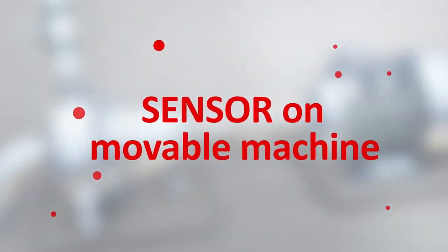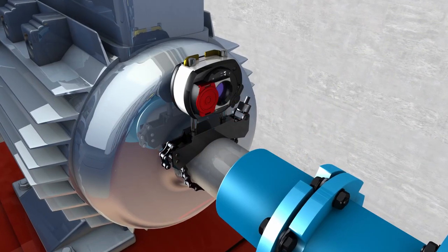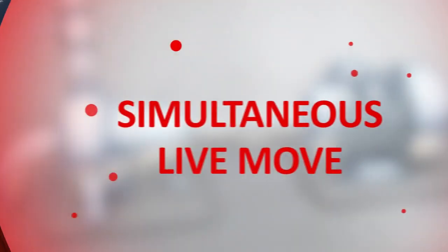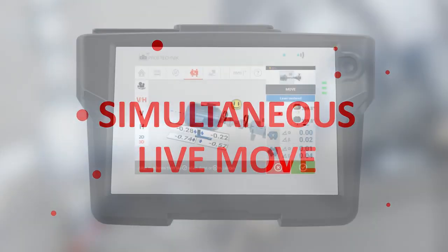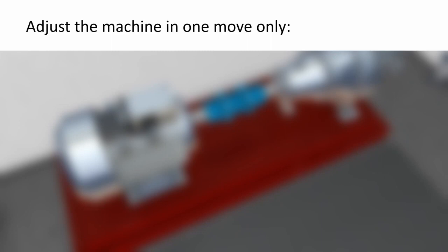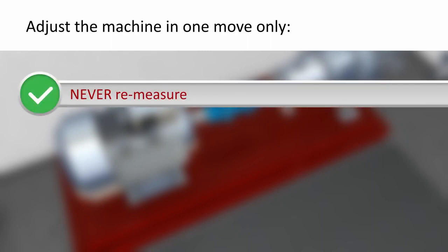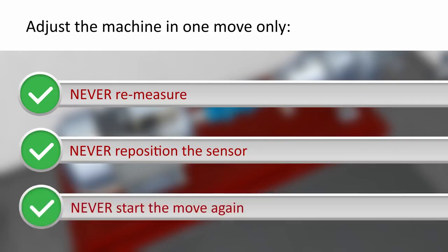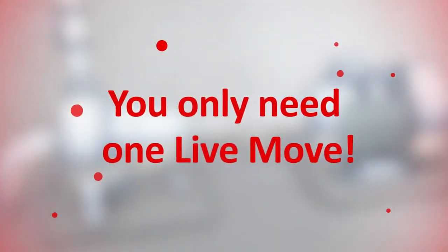To adjust the machine alignment, use the simultaneous live move function of your single laser alignment system. Live move monitors the machine movements on both the horizontal and vertical planes simultaneously. Benefits of simultaneous live move using single laser technology: adjust the machine in one move only, never remeasure, never reposition the sensor, never start the move again. You only need one live move.